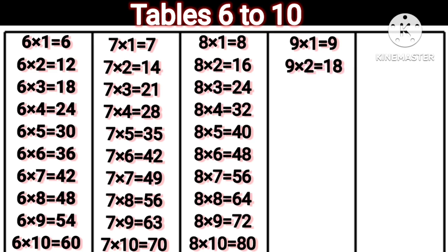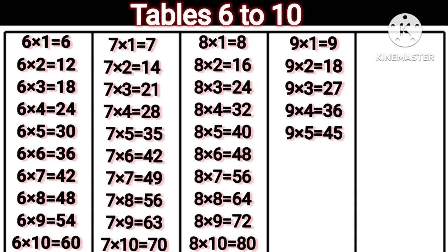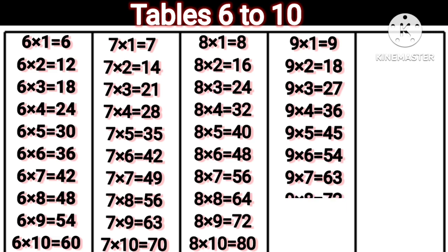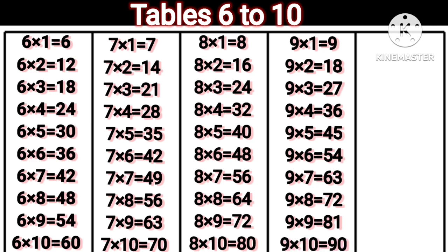9 1s are 9. 9 2s are 18. 9 3s are 27. 9 4s are 36. 9 5s are 45. 9 6s are 54. 9 7s are 63. 9 8s are 72. 9 9s are 81. 9 10s are 90.